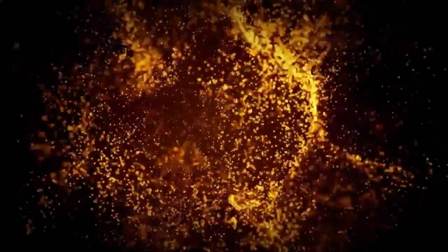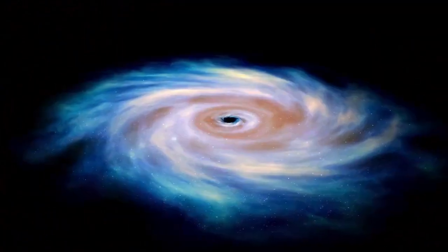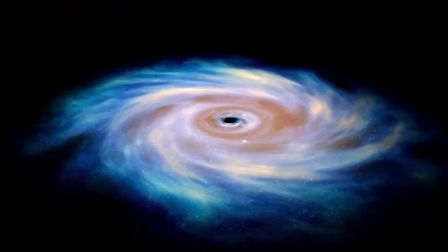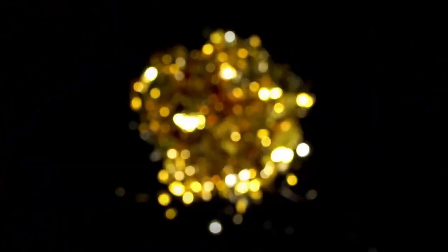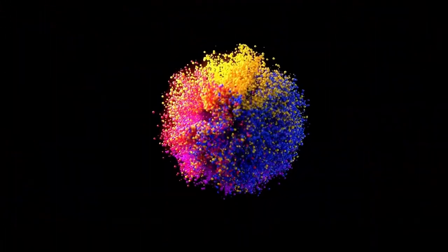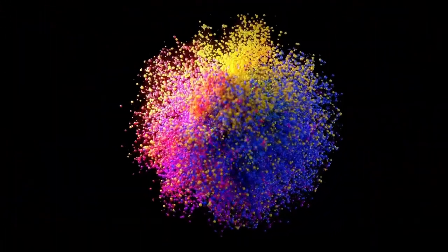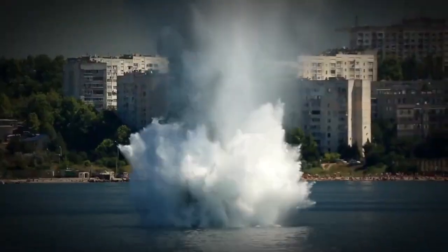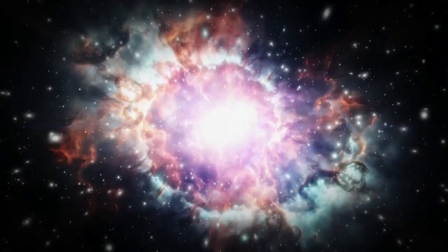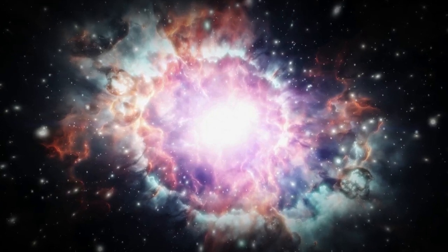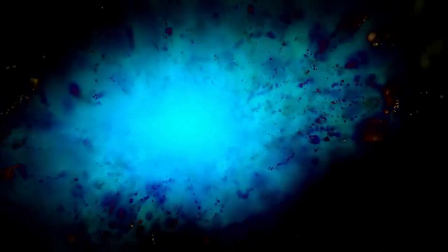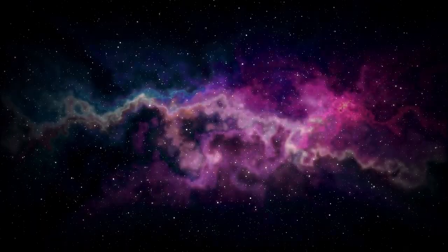Betelgeuse, approximately 764 times larger than our sun, is a stellar behemoth. Its sheer size is almost beyond human comprehension. Imagine a star so large that, were it to replace our sun, its surface would extend beyond the orbit of Mars, engulfing Mercury, Venus, Earth, and Mars in its stellar embrace. This incredible size speaks to its stage in the stellar life cycle.